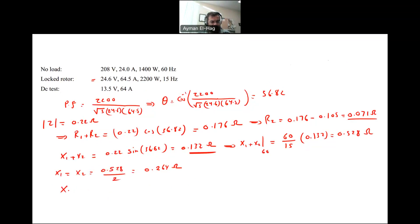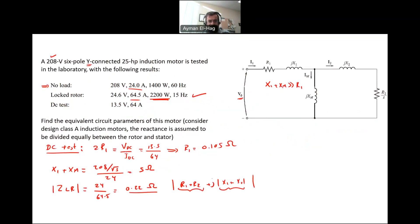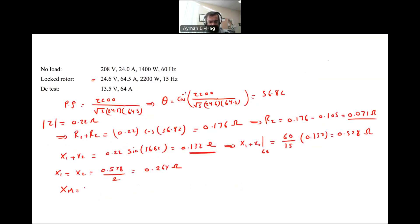What is left is XM, which equals the 5 ohms we found earlier for X1 plus XM. It equals 5 minus X1 which is 0.264, and this equals 4.736 ohms. As you can see here, XM should be much larger than X1 or X2.